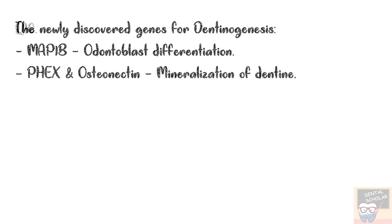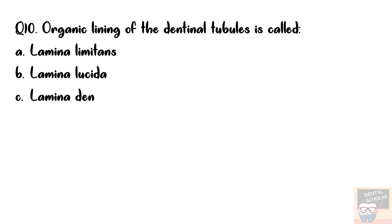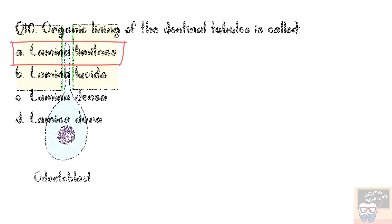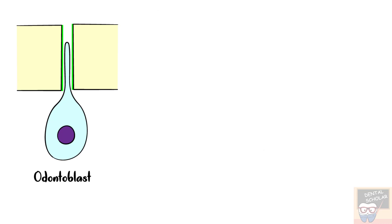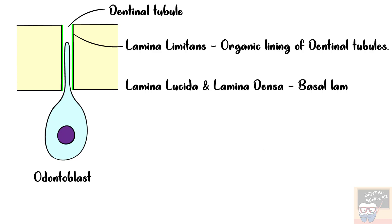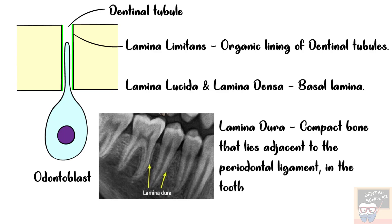Question number 10: The organic lining of dentinal tubules is called — options are Lamina Limitans, Lamina Lucida, Lamina Densa, and Lamina Dura. The answer is option A, Lamina Limitans. The dentinal tubule is lined by Lamina Limitans, which is its organic lining. Lamina Lucida and Lamina Densa are layers of the basal lamina, while Lamina Dura is the compact bone adjacent to the periodontal ligament in the tooth socket.